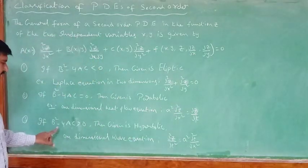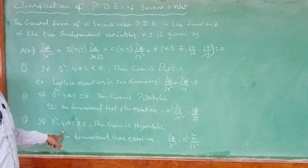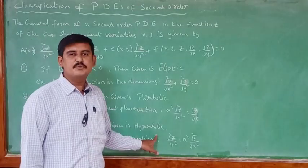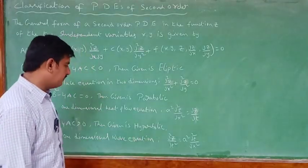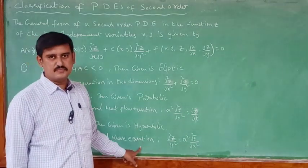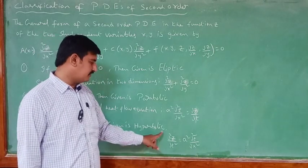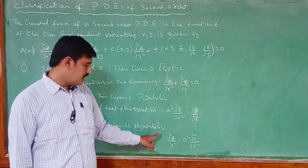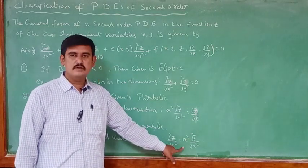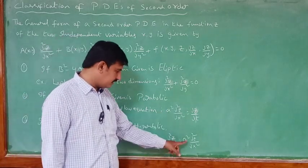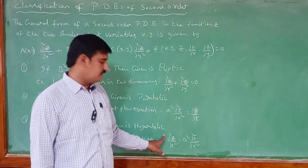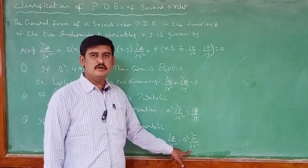The third case: if b² − 4ac is greater than 0, then the given equation is called a hyperbolic equation. The example is the one-dimensional wave equation: ∂²z/∂t² = a² ∂²z/∂x². You can cross-multiply the constant to write it as (1/a²) ∂²z/∂t² = ∂²z/∂x².